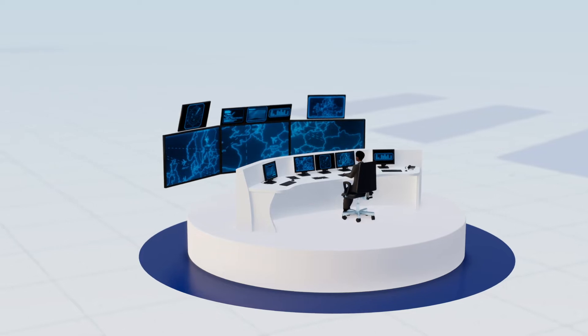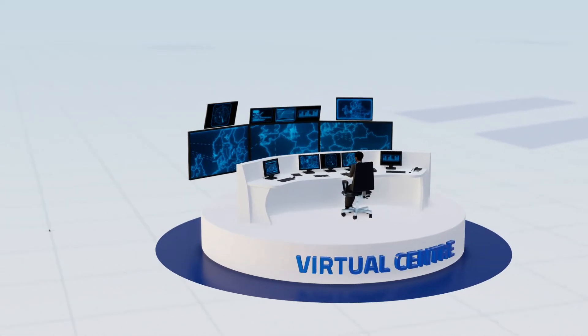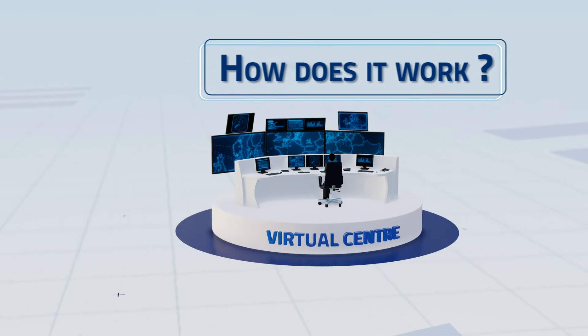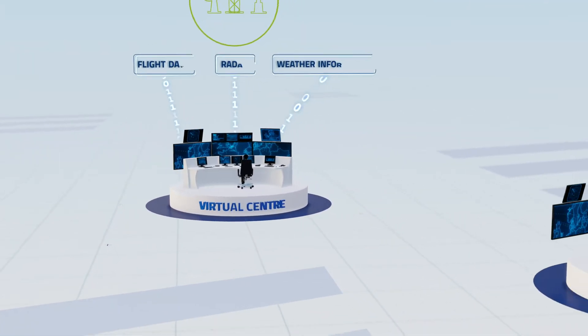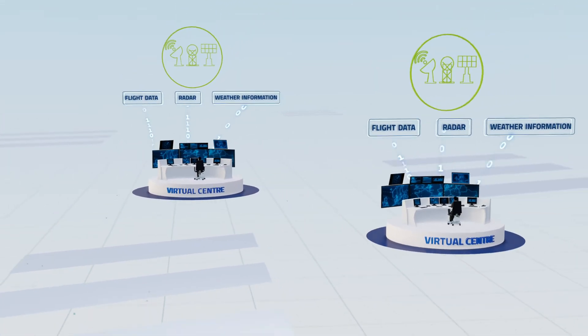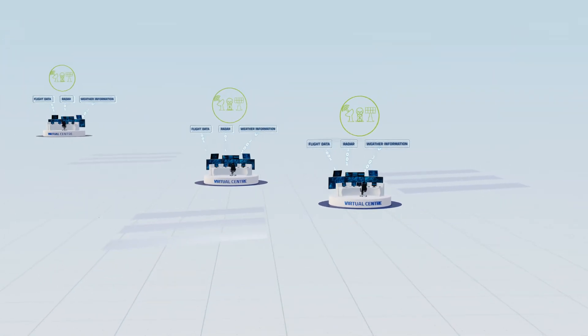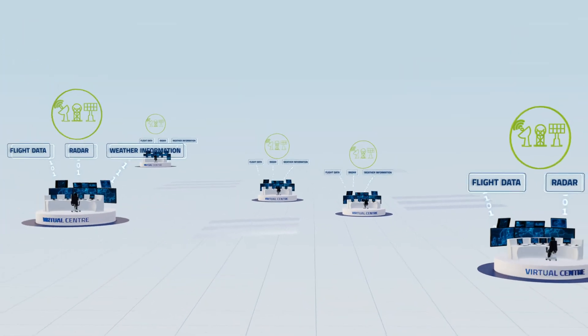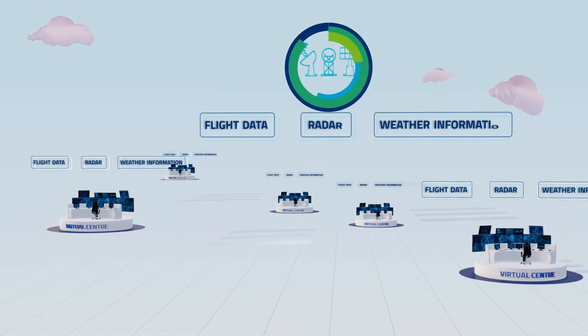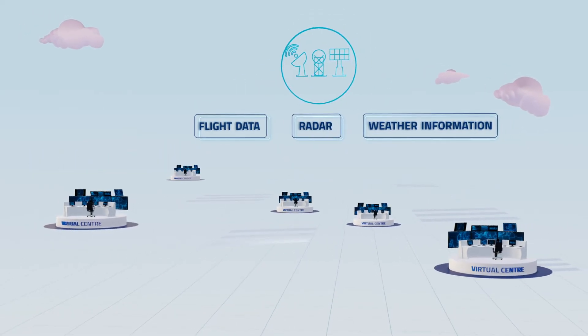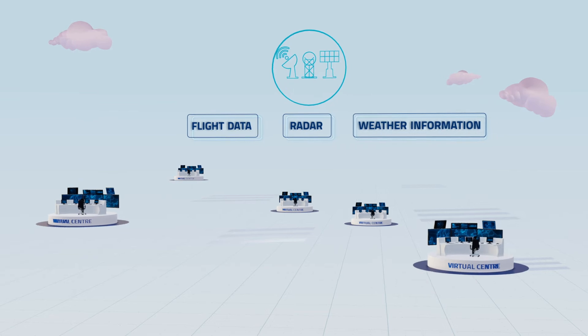That's where the Seesaw solution Virtual Centres comes in. How does it work? Virtual Centres see the unbundling services that make up air traffic control such as flight data, radar and weather information, and decoupling services from the physical location of the control centre and the controller working position.